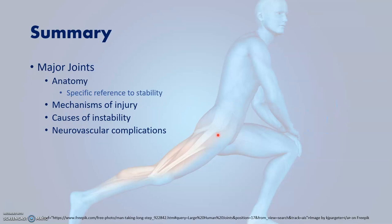If you have any questions, you can bring them up in class. In summary, we looked at the anatomy of major joints, mechanisms of dislocation, causes of instability, and neurovascular complications. Thank you.